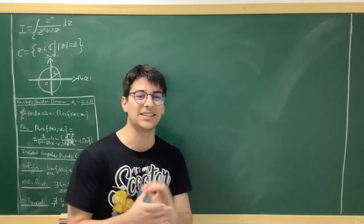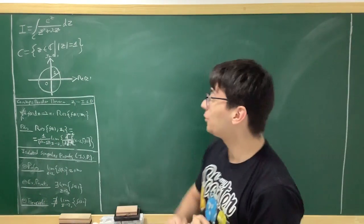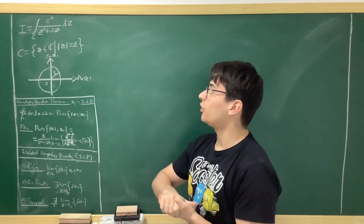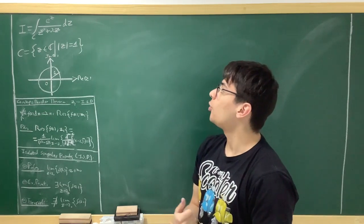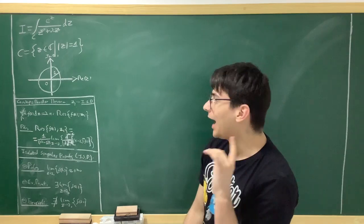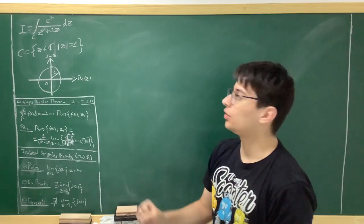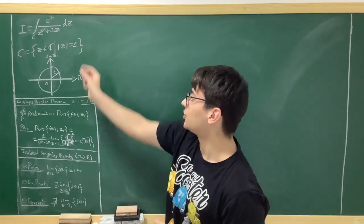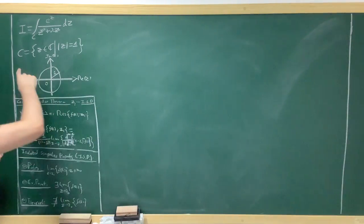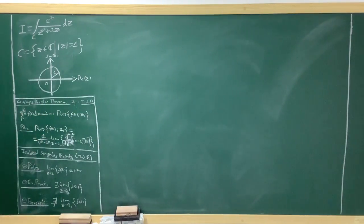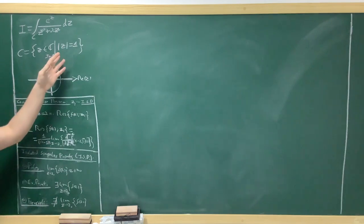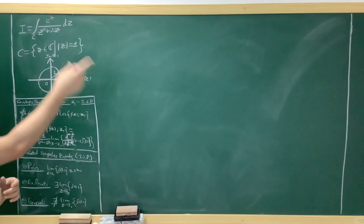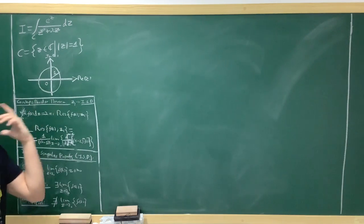Today we're going to be calculating a complex integral. The integral we're going to calculate is the integral along c of e^c over c² + 2c, and the contour we're going to be integrating along is just the set of points c belonging to the complex numbers such that the modulus is equal to 1 — a circumference of radius 1 centered at the origin.